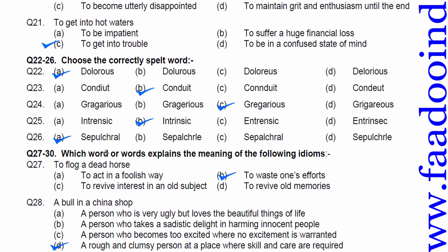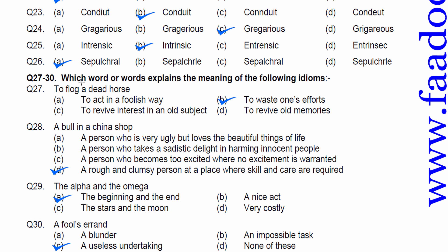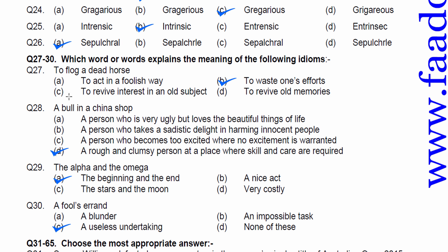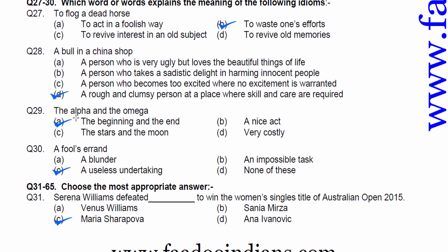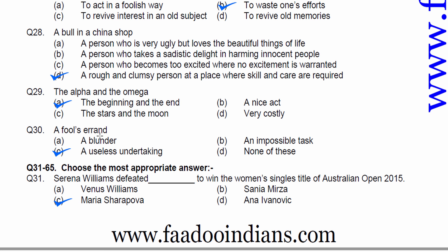Twenty-seven to thirty. Which word or words explain the meaning of the following idioms? Flog a dead horse. Flog means beating. That is, wasting your efforts. Therefore, option B is correct. To waste one's efforts. A bull in a china shop. Mismatched person. Therefore, option D is correct. A rough and clumsy person at a place where skill and care are required. Twenty-nine. The alpha and the omega. Well, it's a very common idiom. Therefore, the beginning and the end. A part is the answer. Thirty. A fool's errand. Activity that has no success. A useless undertaking.